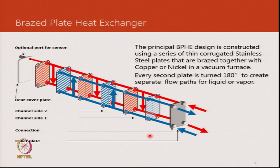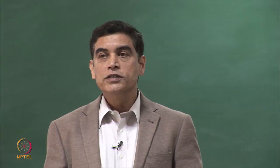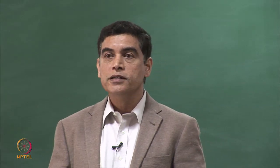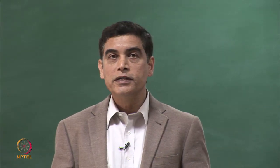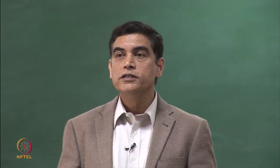A brazed plate heat exchanger is a replacement or alternative for shell and tube condensers. Multiple plates with grooves for refrigerant flow are stacked and welded together, making a very compact heat exchanger. These are among the most effective heat exchangers for both evaporator and condenser applications. Typically used in chillers with water on one side and refrigerant on the other, they can also be used between two refrigerant streams.